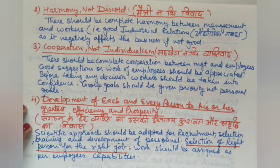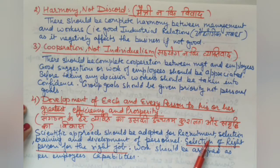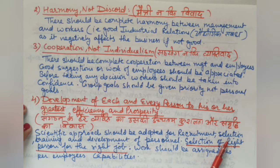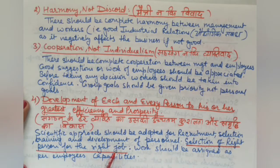We need to set scientific standards for both recruitment and selection. The selection procedure should follow a scientific approach, including methods such as written tests, interviews, psychological tests, and trade tests. These scientific methods ensure we identify the right candidates for the business.